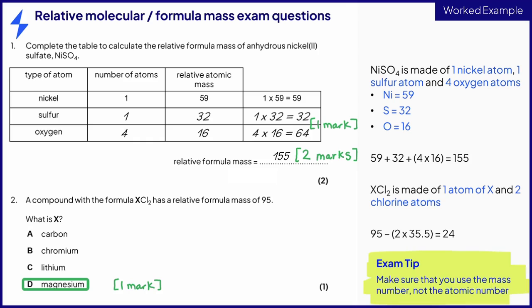Be careful because a very common mistake in these questions is to use the atomic number on the periodic table instead of the mass number.